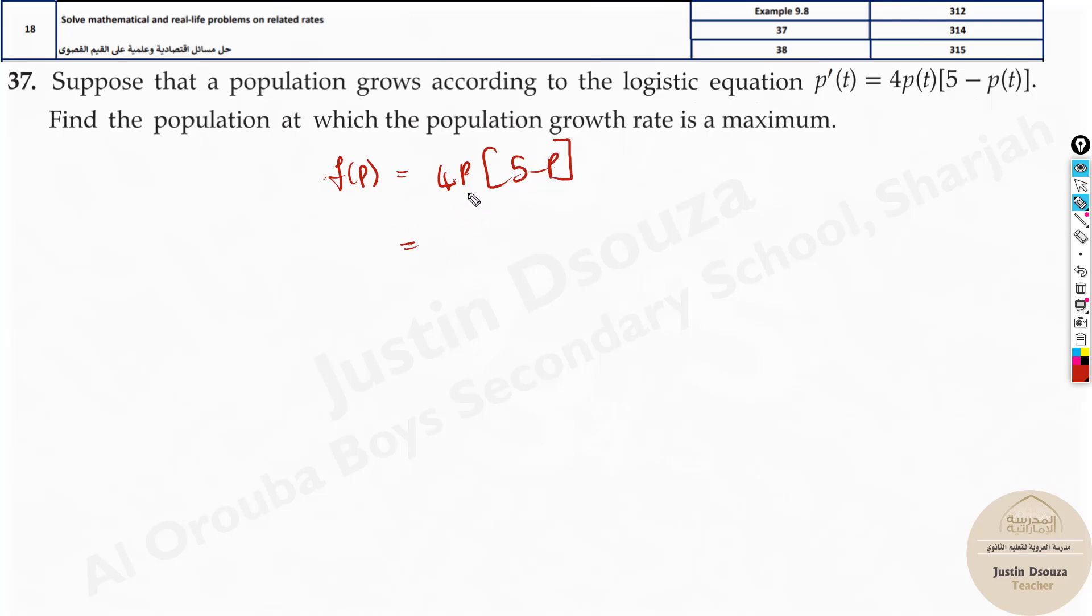So we need to find the critical number. Let's write it as f(p) equals 4p(5 minus p). And now, first let's simplify this. Multiply this 4 inside will be 20 times p minus 4p power 2. This is f(p). Now we need to derive it.